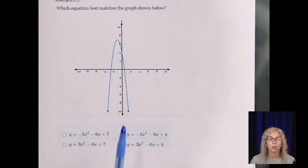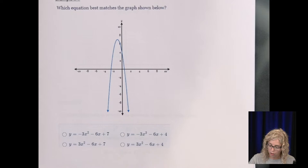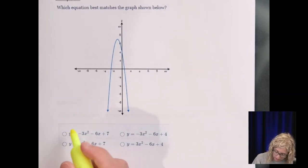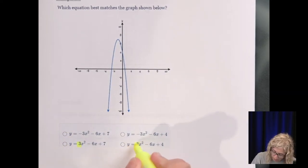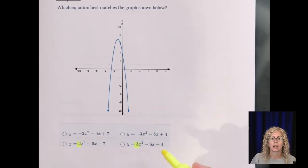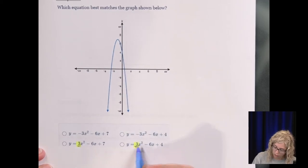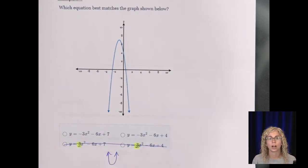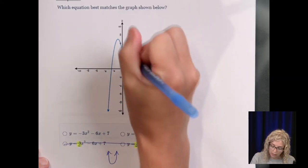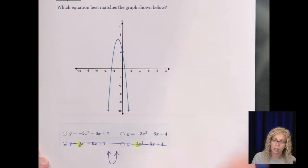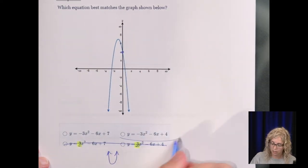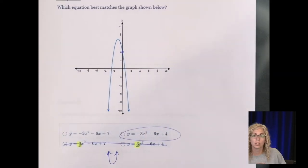Which equation best matches the graph shown below? Now in a question like this, this parabola is opening upside down. So you can get rid of any answer choices that have an A value that's positive, right? It has to be negative. It's going to go upside down. Because a parabola with a positive A value, remember it goes ABC, that's going to be right side up. So these answer choices are out.